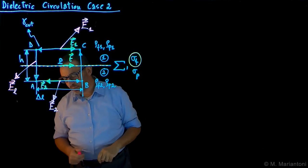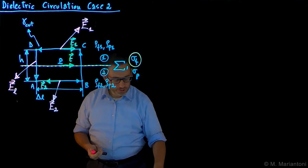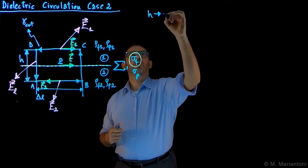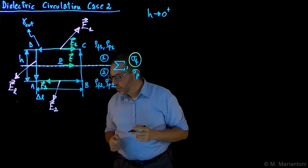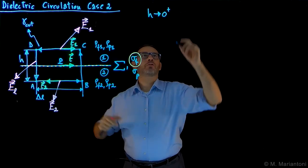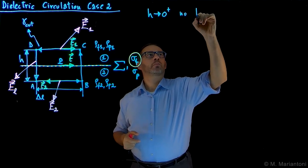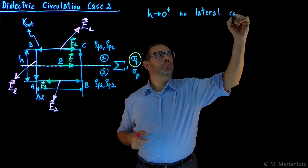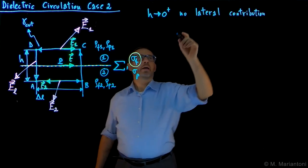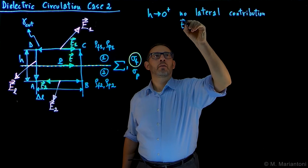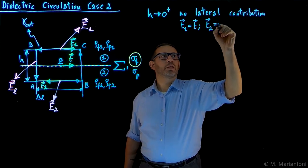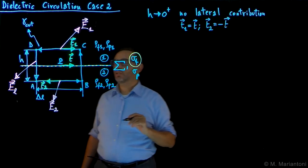This is all we need in order to solve this problem. Now we want to squeeze it down to see the local property of E. How do we do that? As always, we bring H that goes to zero plus. Under these conditions, when H becomes small, the lateral contribution is negligible. We don't care about the lateral contribution. And in addition, T1 becomes exactly equal to T, whereas T2 becomes equal to minus T under these conditions.